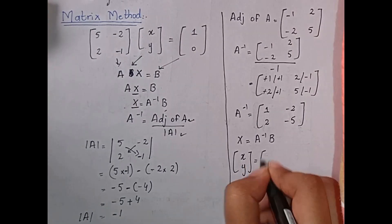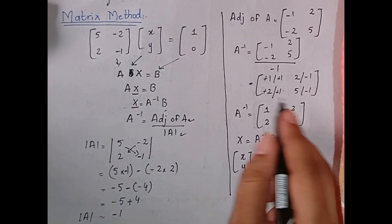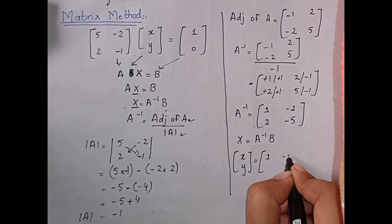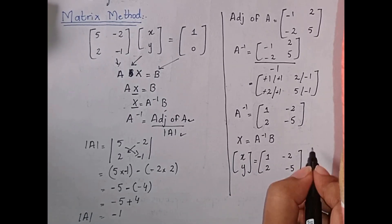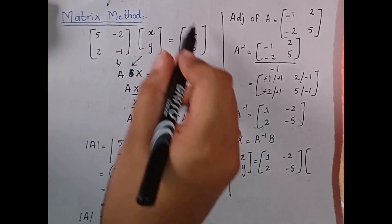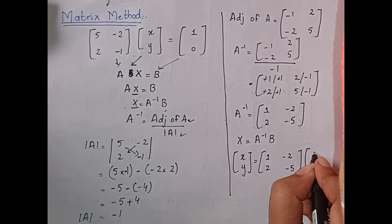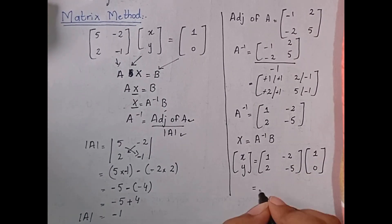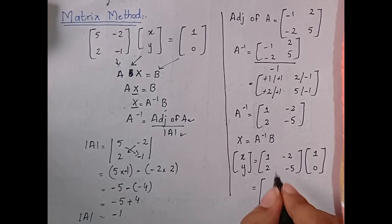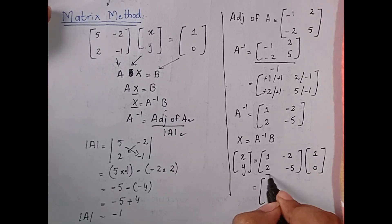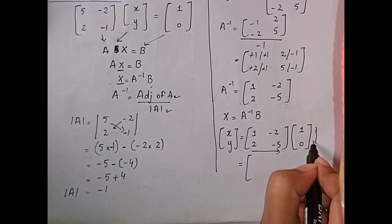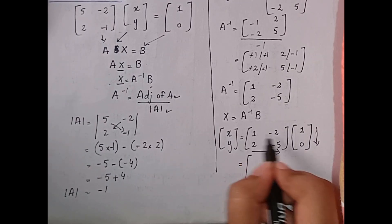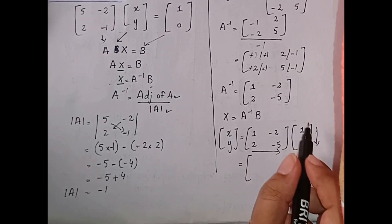Now we have both components. The A inverse matrix is: 1, -2, 2, -5. We multiply this by the B matrix, which is 1 and 0. This is the last step of the matrix method. We multiply using the row-by-column rule, which we have learned before.